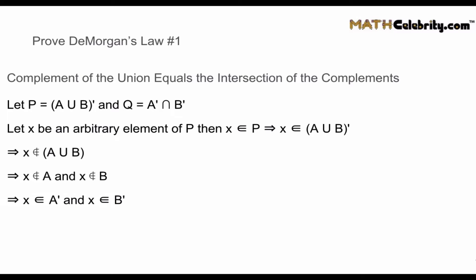That means X is both not an element of A and not an element of B. Since it can't be in A and can't be in B, it is an element of A complement and an element of B complement. Since 'and' corresponds to intersection, X is an element of A complement intersected with B complement — meaning X is an element of Q, which is A complement intersection B complement. So we've proven the first DeMorgan's Law.